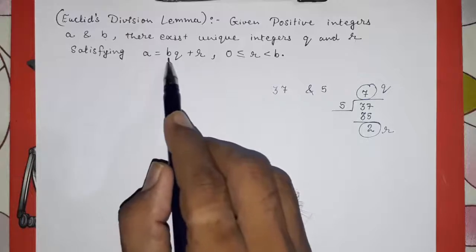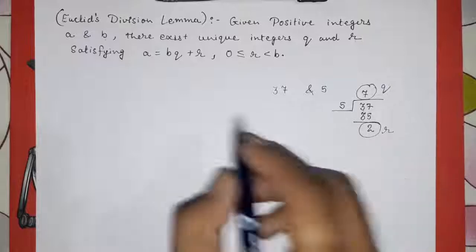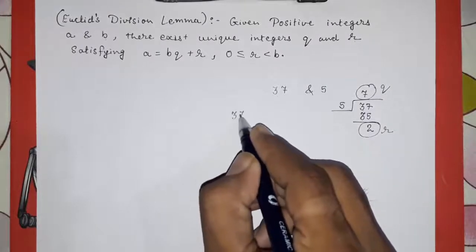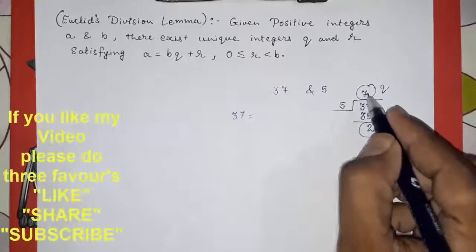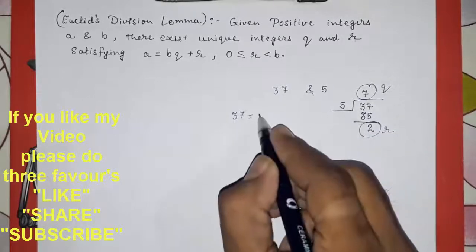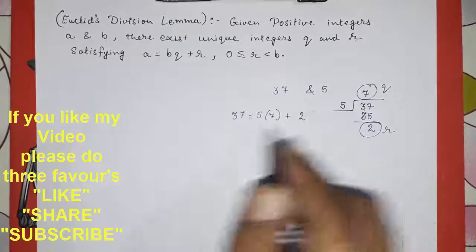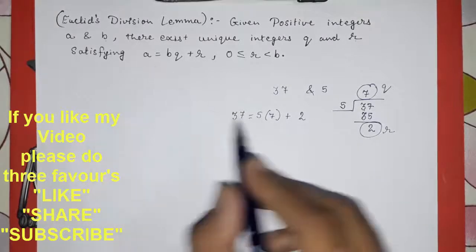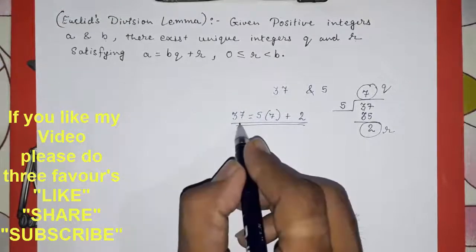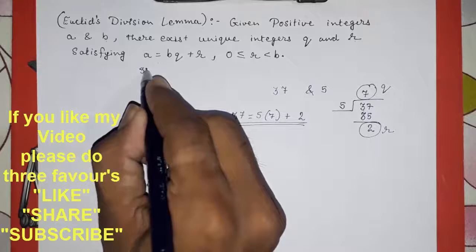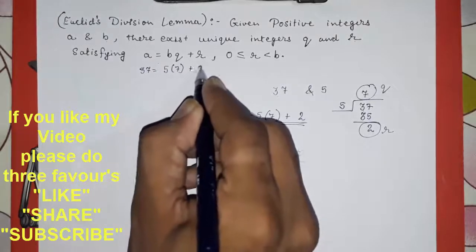Satisfying a is equal to bq plus r, means what? We have to write down 37 is equal to multiplication of this divisor and quotient plus remainder. That is, a is equal to 5 into 7 plus 2. Look here, this is the same form. a means the number which we have to divide, that is 37, so 37 is equal to 5 into 7 plus 2.